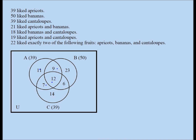Going back to the first slide, it clearly tells us that all the students liked one of the three fruits. So the region outside all three circles is 0 — nothing goes there because all students surveyed liked one of the three fruits. We now have the Venn diagram with all numbers in the right places, and we are going to use it to answer the four questions.